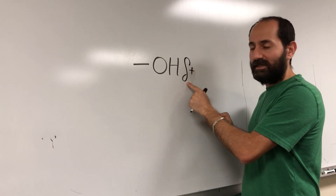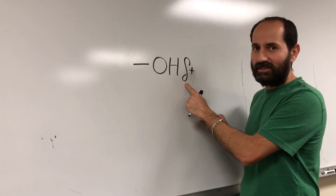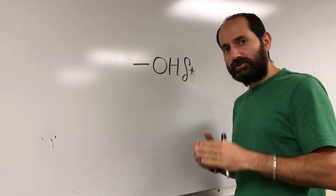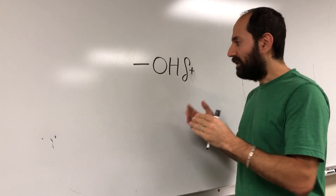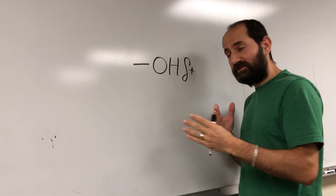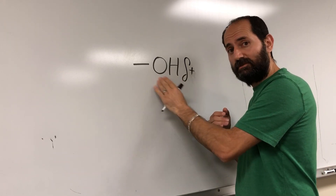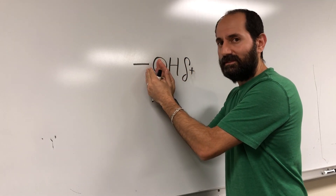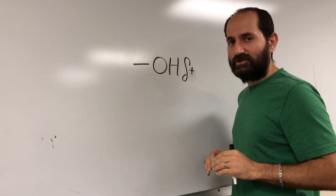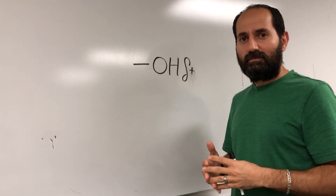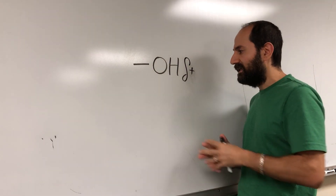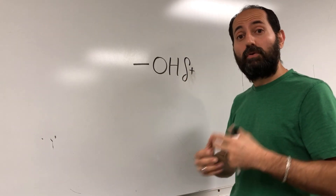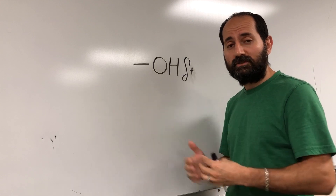That symbol is a lowercase delta in Greek letters — delta plus. Hydrogen forms a partial positive charge because those negatively charged electrons are spending too much time with oxygen and too little time with hydrogen, giving hydrogen a slight positive feeling. This is what polar means — this is a polar covalent bond, and polar covalent bonds make molecules polar.